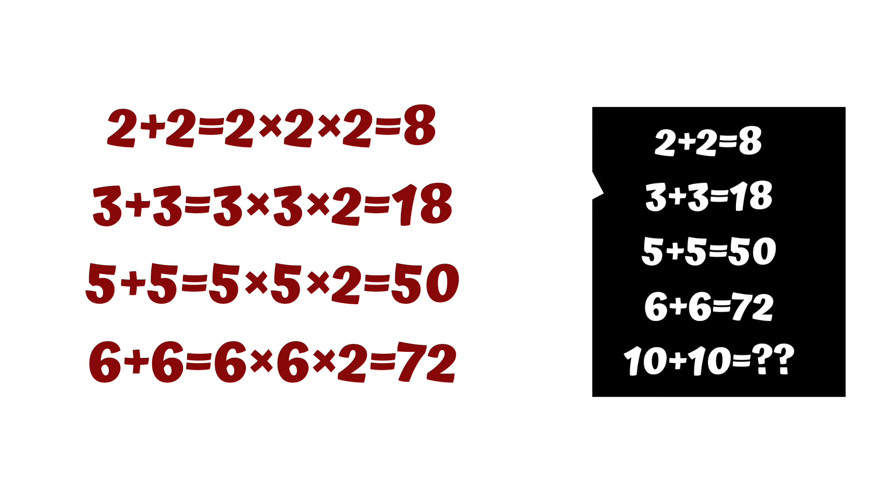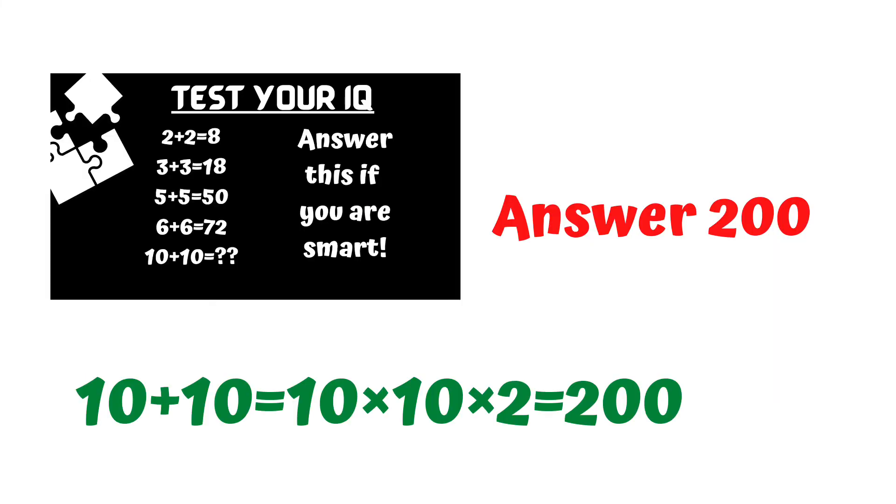Friends, all rows justify. The final answer according to this trick: 10 plus 10, we will write 10 into 10 into 2, solved answer 200. Yes friends, this maths reasoning puzzle final answer is 200.